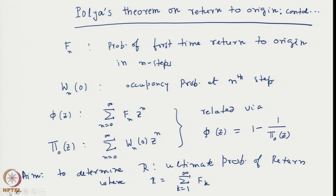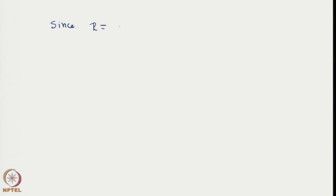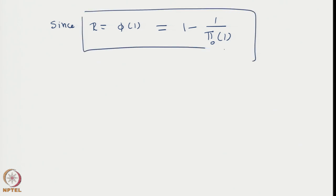That led us to a simple relationship for R: since R turns out to be just φ evaluated at unity (z=1), the generating function is the same as the definition of the ultimate return probability R. Hence we obtained R = 1 minus 1 over π₀(z) evaluated at z=1. Now it remains to evaluate π₀(z) and then π₀(1).